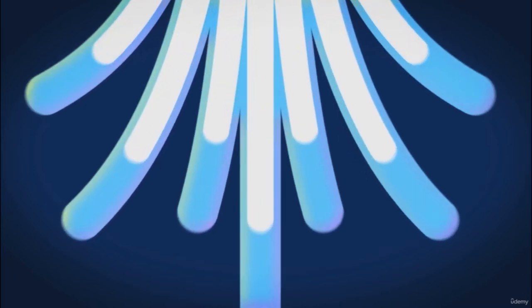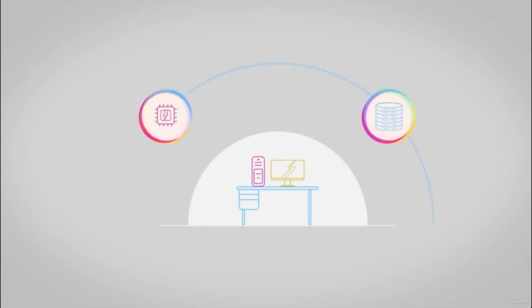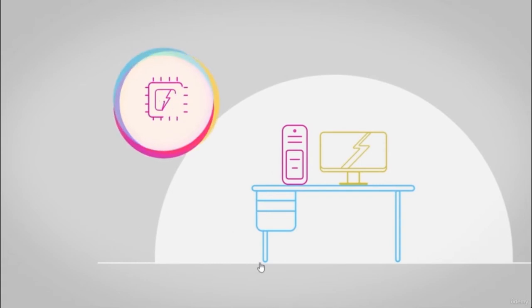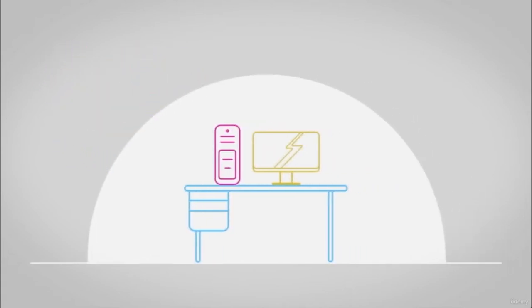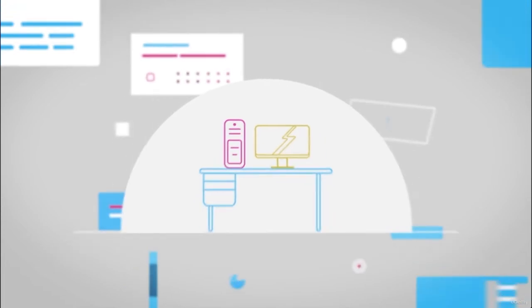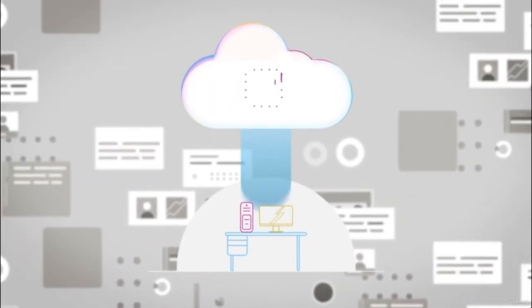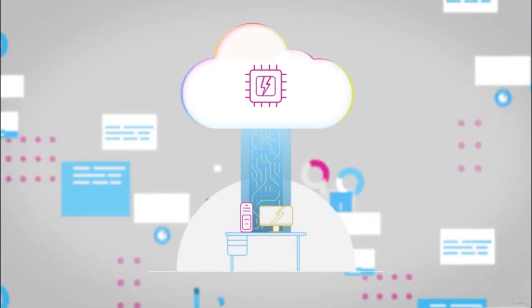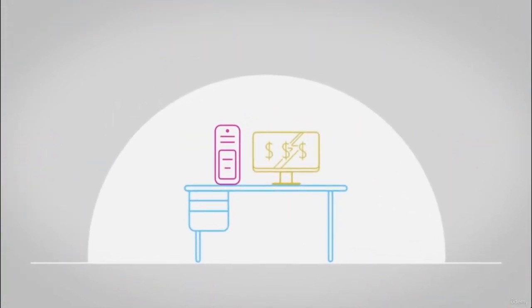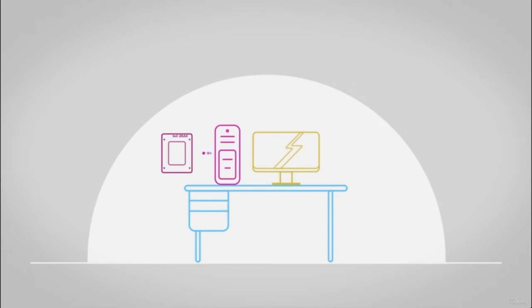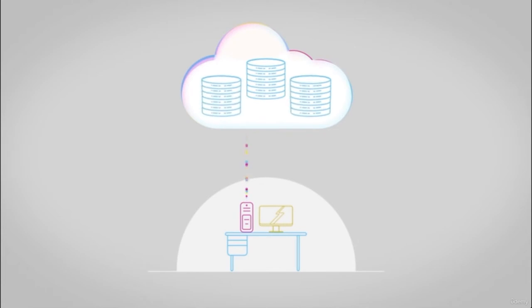Each cloud provider will have their own selection of services, but the basic services provided by all cloud providers are compute power and storage. Compute power is how much processing your computer can do. For example, when buying a home computer you may choose 8 gigabytes of RAM and the latest processor, but as load grows the computer slows down. With cloud computing you can add and remove compute power as you need it, paying only for the resources you use. Storage is the volume of data you can store — with cloud computing you can request more storage as you need it.